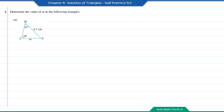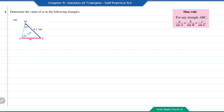Practice 9.2, question number 1 — determine the value of M in the following triangles. Question A: M is opposite angle 55°, and the length MN (6.7 cm) is opposite angle 78°. Using the sine rule: M over sine 55° equals 6.7 over sine 78°. To find M, multiply both sides: M equals 6.7 over sine 78° times sine 55°. Taking at least 4 significant figures, M equals 5.611.